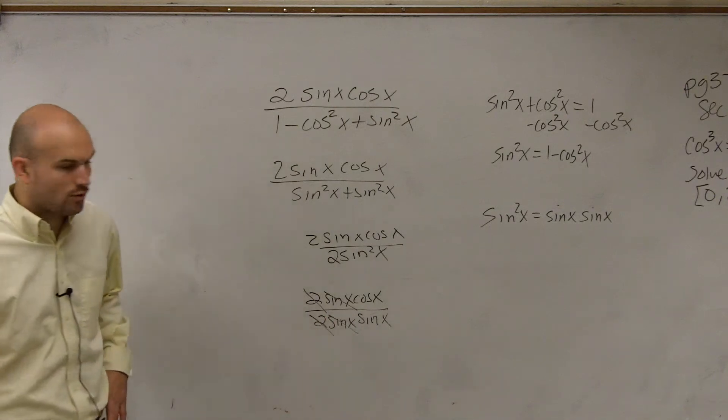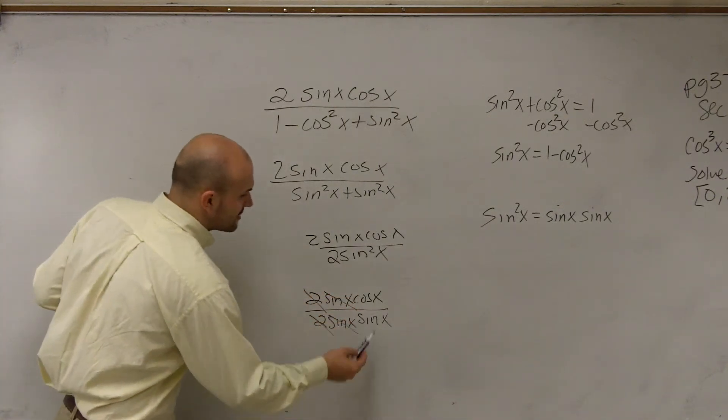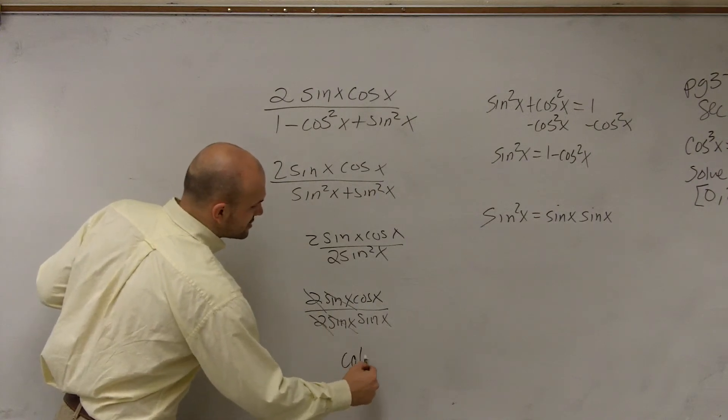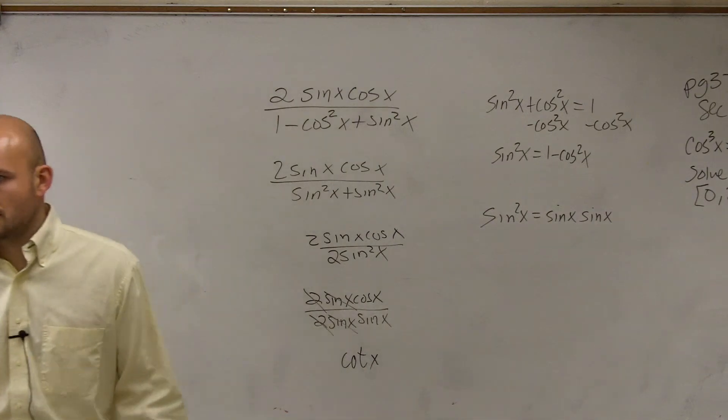The 2's divide out to equal 1, just leaving you now with a cosine divided by sine, which is cotangent of x. Cool? All right.